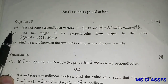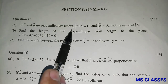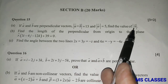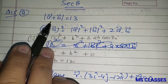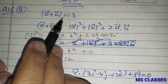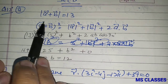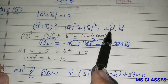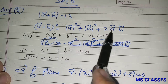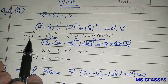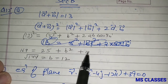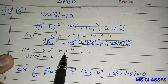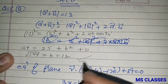Section B, Question 15: If vectors a and b are perpendicular and |a + b| = 13, |a| = 5, find |b|. Squaring: |a + b|² = |a|² + |b|² + 2a·b. Since the angle between a and b is 90°, cos90° = 0, so a·b = 0. Thus 169 = 25 + |b|², giving |b| = 12.